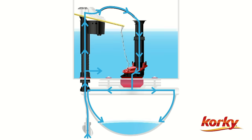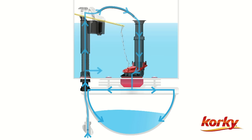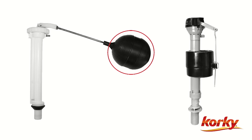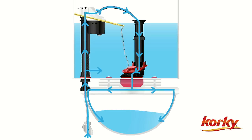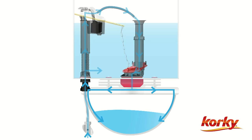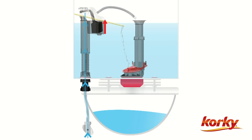As the water rises in the tank the float rises. Your float may look like this or this. The float will rise and shut the valve off, stopping the water once it reaches the fill line.